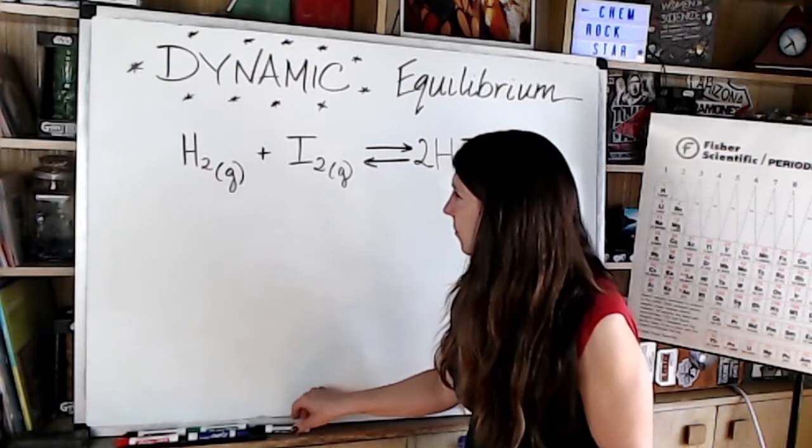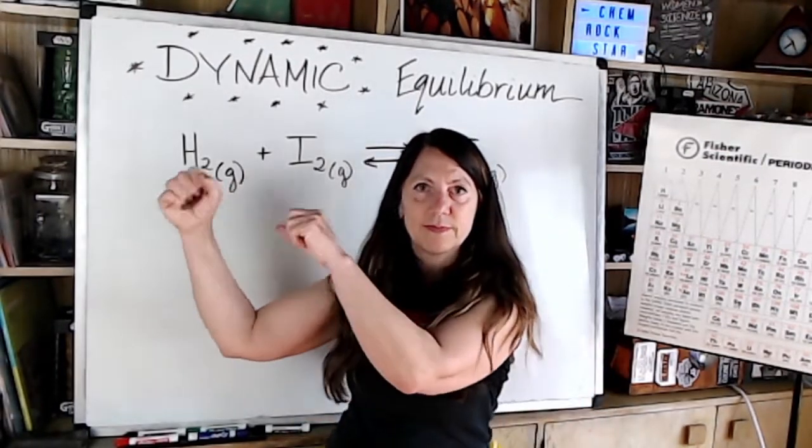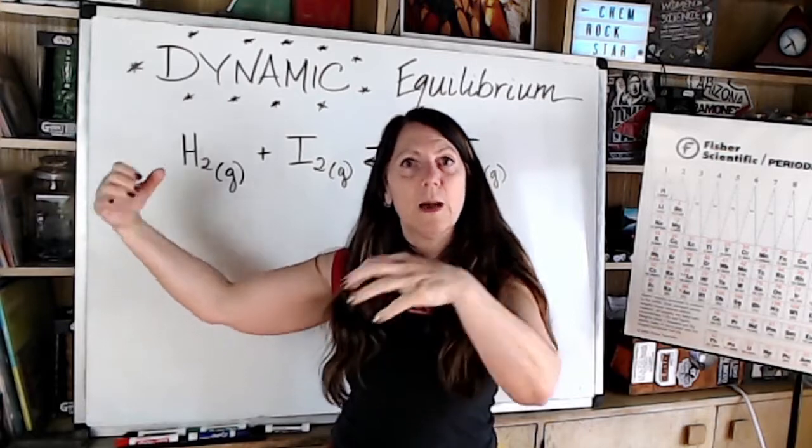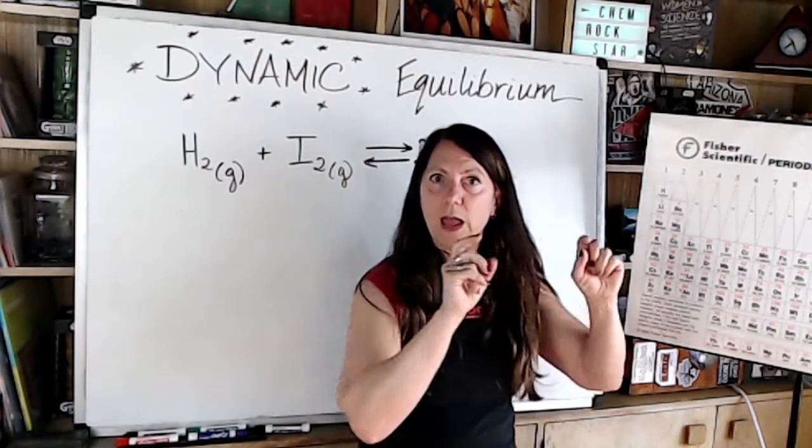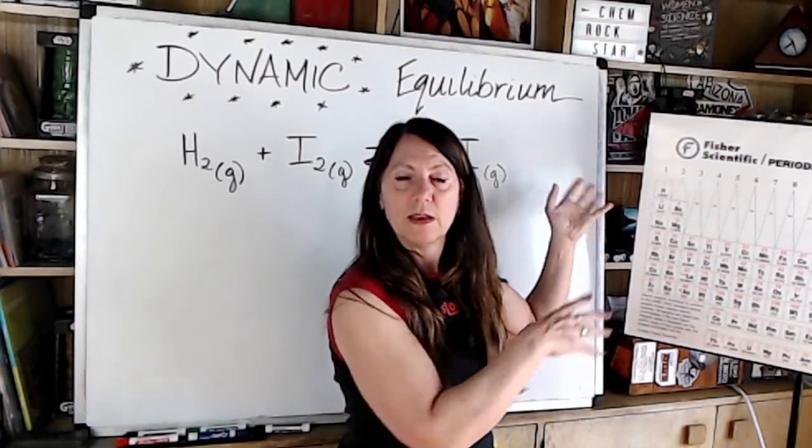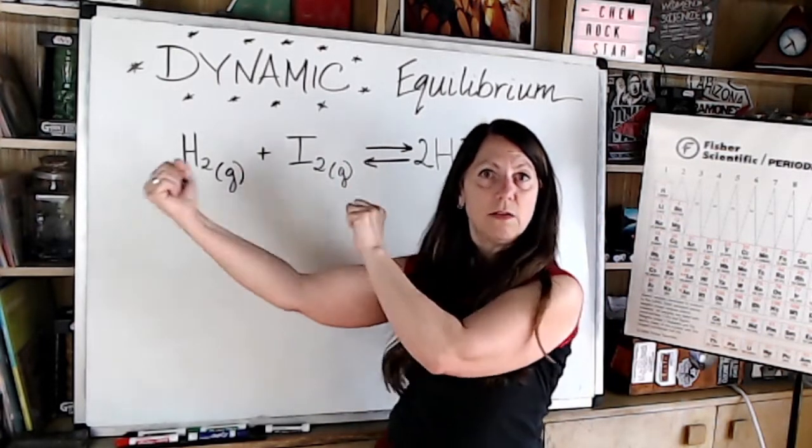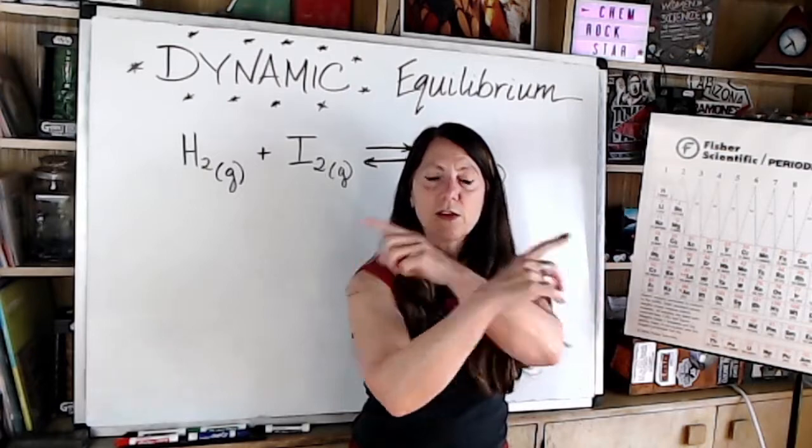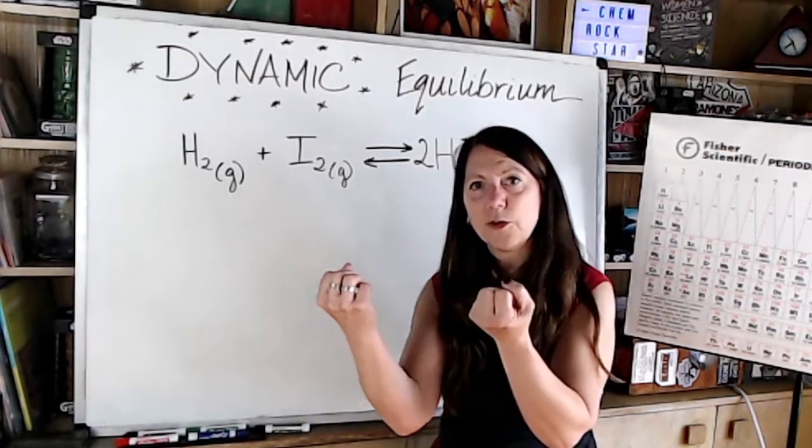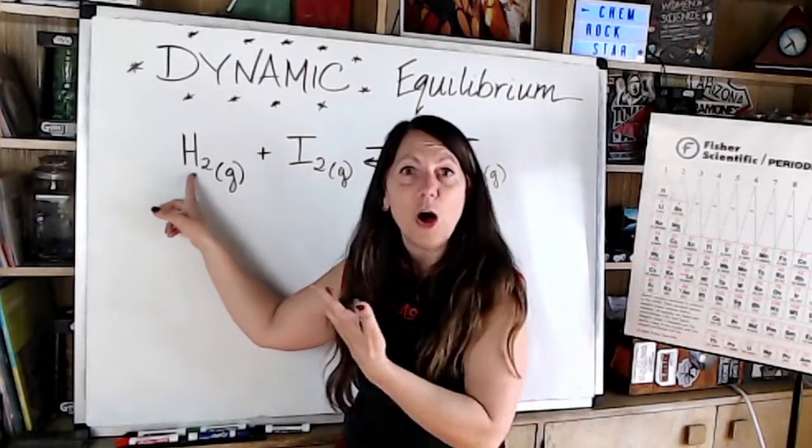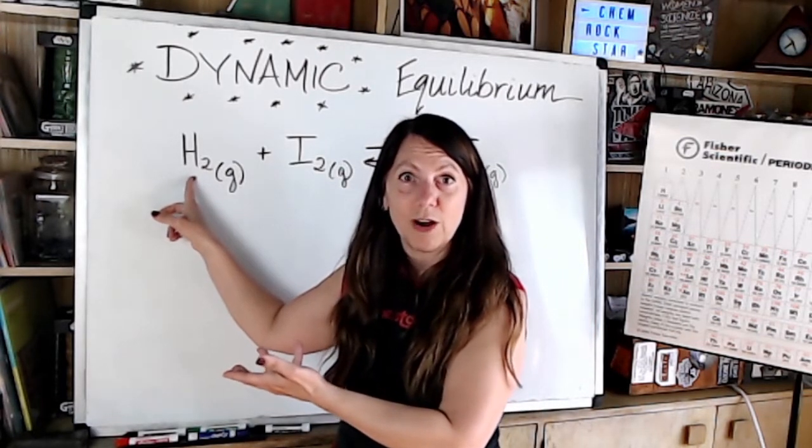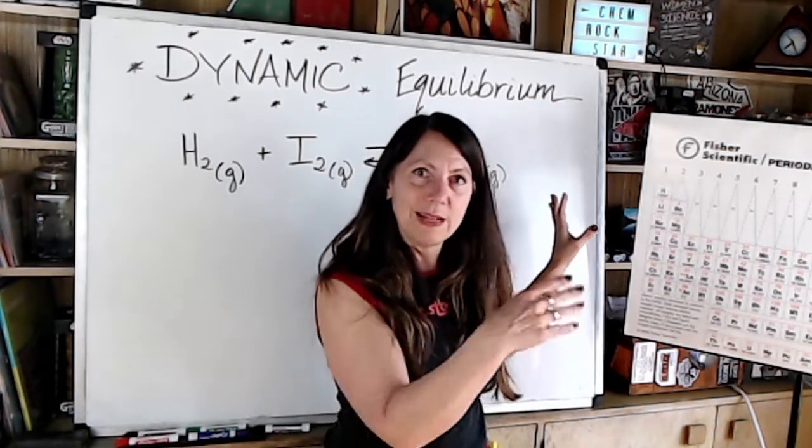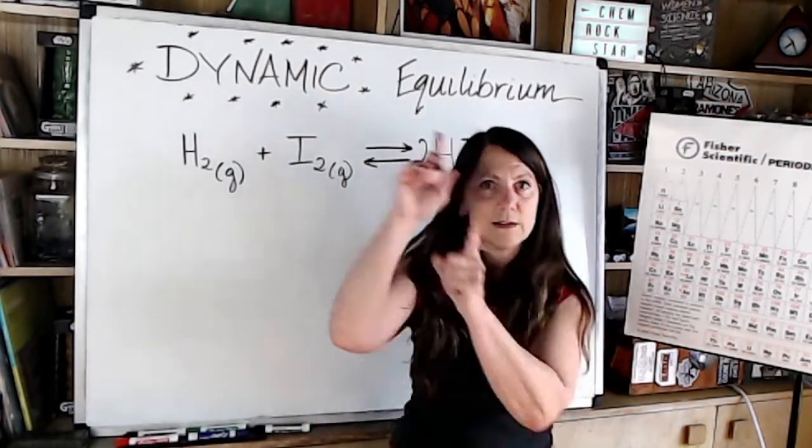So we've got these molecules, H2 and I2. Some of them are colliding and just bouncing off each other and not reacting, but some are colliding in a certain way and they're creating the products. And then we've got these breaking apart and reforming these reactants. This is constantly happening. Constantly. And so the molecules that are over here are not always going to be the same atoms that they were two minutes ago. Some of those atoms might be back over here. And then two minutes later, some of those atoms that were over here are now back over there.